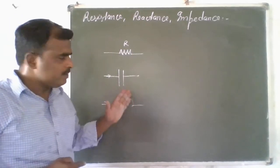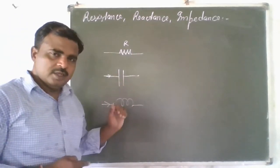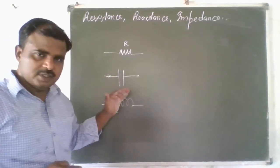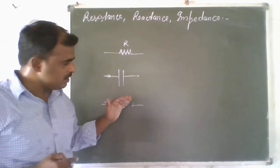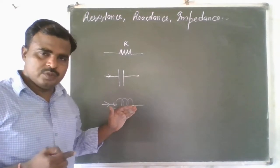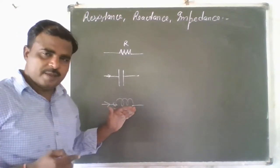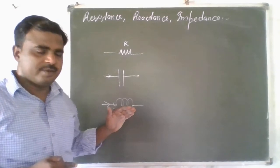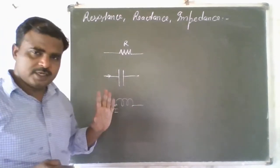So what is the basic difference between resistance and reactance? Resistance means the opposition nature of a pure conductor. Reactance means the opposition produced by either a capacitor or an inductor in the flow of current.